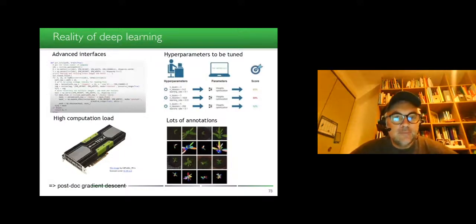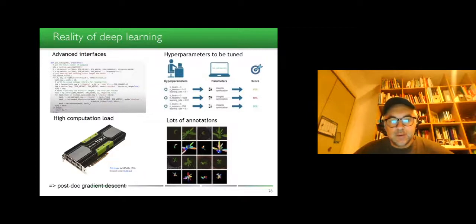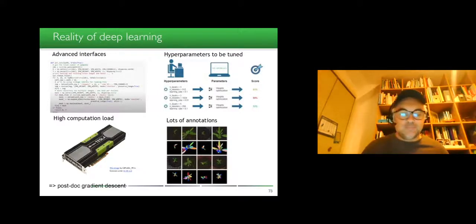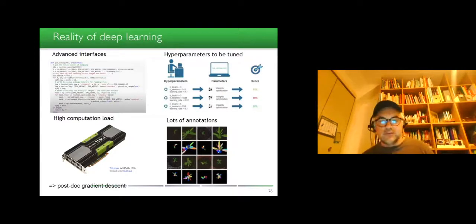Now we are ready for deep learning. Of course it's a very fast introduction, but which gives you the global spirit. The nice thing is that we have relatively advanced interfaces. There are a lot of hyperparameters to be tuned: number of layers, learning rate, duration of the training. There's a lot of annotation to be done, and it requires also high computational load. Sometimes people are talking about postal gradient descent because it takes a lot of time to do this. That was a bottleneck some years ago, but people came with friendlier solutions that I will go through here.